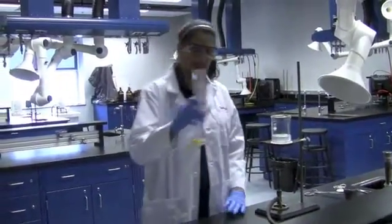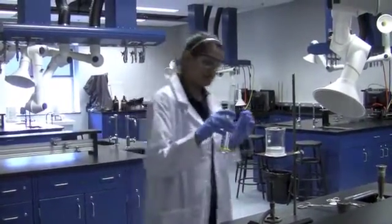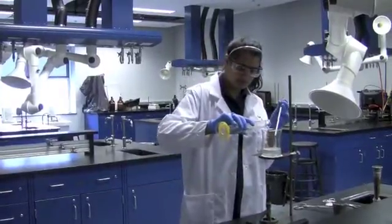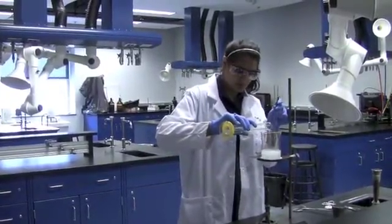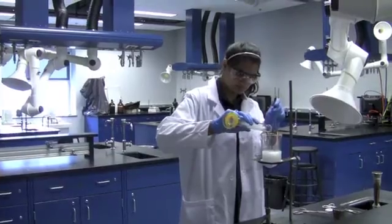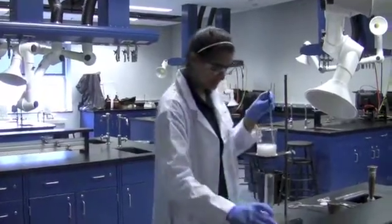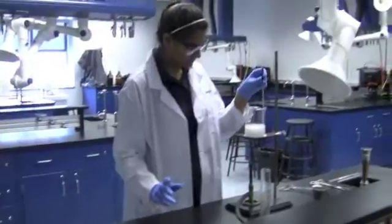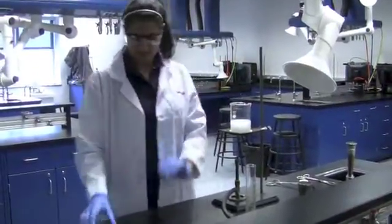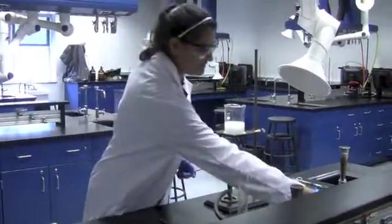And the next step is going to be to add 50 milliliters of the barium chloride while stirring. You can see a white precipitate start to form. And now, once again, you're going to heat the solution for about 10 minutes.